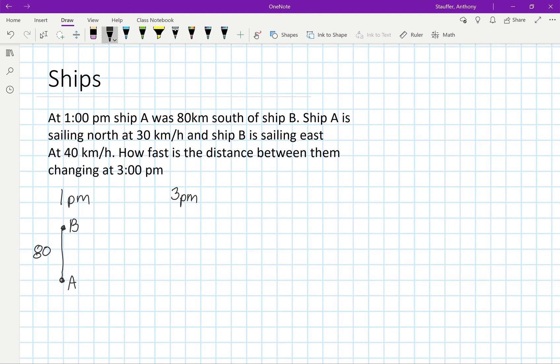Then at 3 pm, ship A is sailing north and ship B is sailing east. So ship B is sailing in this direction and ship A is sailing in this direction.